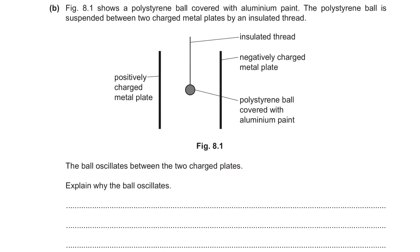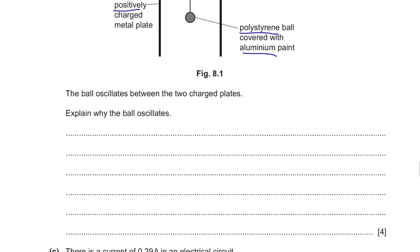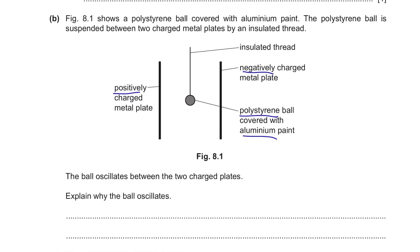Part B: Figure 8.1 shows a polystyrene ball covered with aluminum paint, suspended between two charged metal plates by an insulated thread — a positively charged plate, a negatively charged plate, and the polystyrene ball covered with aluminum paint. The ball oscillates between the two charged plates. Let's say the ball moves towards the positive plate first. When it touches the positively charged metal plate, because it's covered in aluminum — a conducting material — it's going to become positively charged as well.